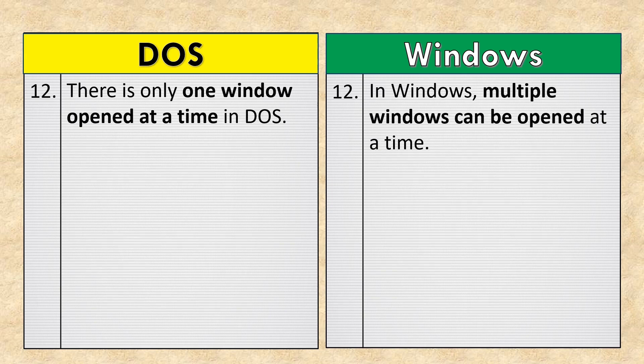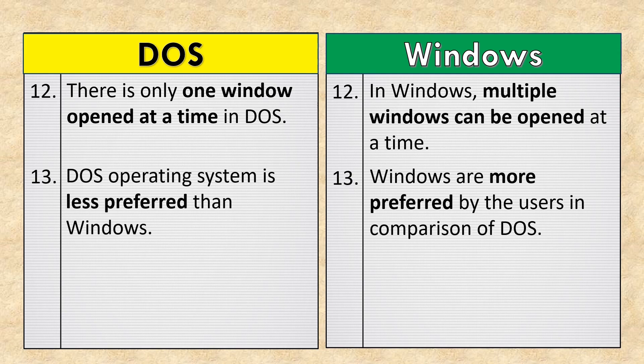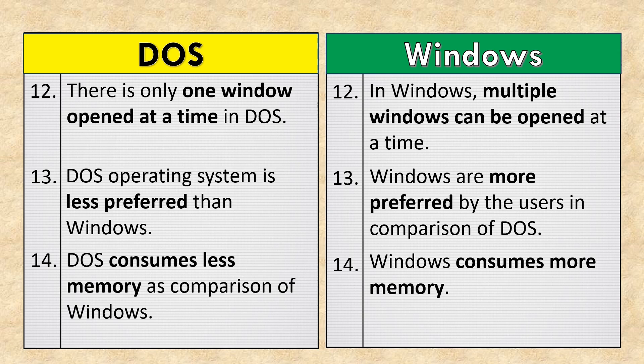There is only one window opened at a time in DOS, whereas in Windows multiple windows can be opened at a time. DOS operating system is less preferred than Windows. Windows is more preferred by users in comparison to DOS. DOS consumes less memory in comparison to Windows, while Windows consumes more memory.